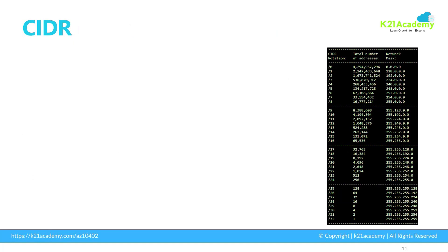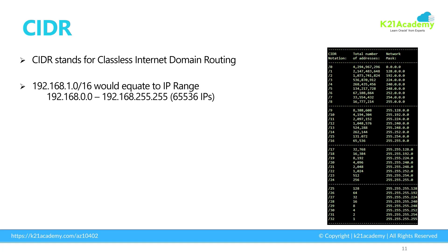CIDR stands for Classless Inter-Domain Routing. This is basically a way to assign a set of IP addresses inside the network. When we say IPv4, it has four octets. The first one — for example 192 — is one octet, which is eight binary digits, ones and zeros.